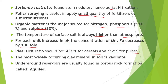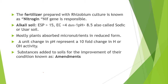The most widely occurring clay mineral in soil is kaolinite. Underground reservoirs are found in porous rock formations called aquifers. The fertilizer prepared with rhizobium culture is known as nitragin, and the NIF gene is responsible for it. In alkaline soil, exchangeable sodium percentage is greater than 50, electrical conductivity is less than 4 dS/m, and pH is greater than 8.5.